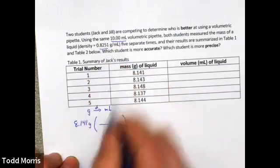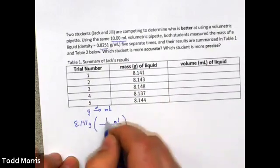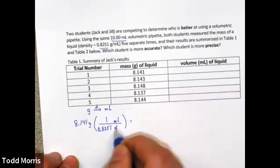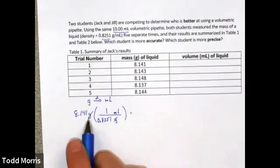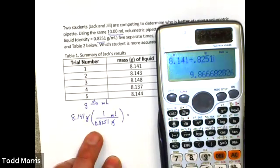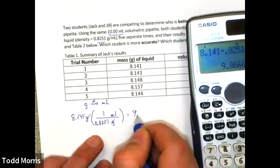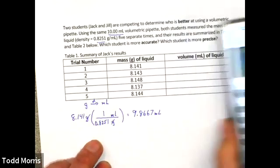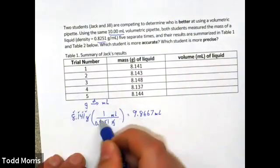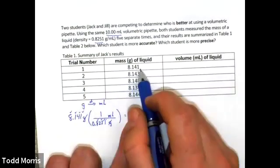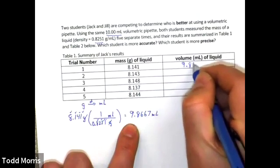Density as a conversion factor. We want grams being on the bottom so that units cancel and milliliter on top. One milliliter is equivalent to 0.8251 grams for this substance. So, practically dividing the mass by the density, we convert a mass of 8.141 grams into the equivalent volume of about 9.8667 milliliters. With the values I'm given, I'm only justified to have four significant figures in my final answer. Because this is not a final answer, I'll keep one extra digit and give me five digits for these intermediate answers. So, a mass of 8.141 grams is equivalent to a volume of 9.8667 milliliters.